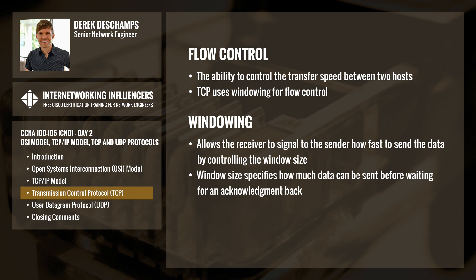TCP gives each host the ability to slow down the speed of data transfer if they are being overwhelmed. The ability to slow down the speed that data is being transferred is known as flow control. The type of flow control that TCP uses is called windowing. Windowing allows the receiver to signal to the sender how fast to send the data by controlling the window size, which specifies how much data the sender can send before waiting for an acknowledgement, thus controlling the transmission rate.